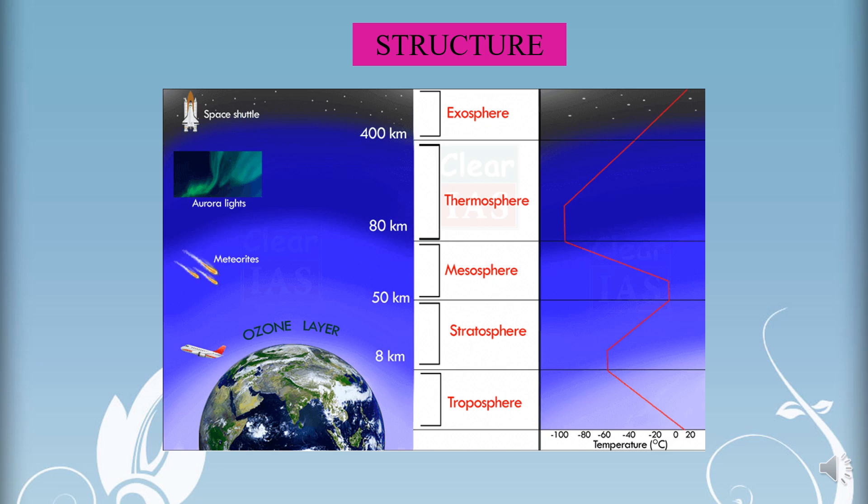Coming to the structure of the atmosphere. The atmosphere is an integral part of the planet; it surrounds the earth from all sides. Generally, it extends up to about 1600 kilometers from the earth's surface. 97% of the total weight of the atmosphere is limited up to a height of about 30 kilometers. The atmosphere can be divided into 5 layers according to the diversity of temperature and density: troposphere, stratosphere, mesosphere, ionosphere, and exosphere.